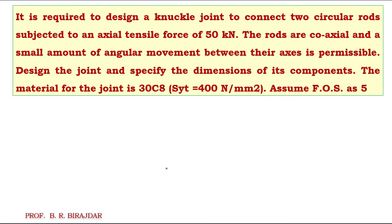Hello everyone. In the last lecture we had seen the design of the knuckle joint and the design procedure — what are the different steps we have to follow. Now in this lecture we will try to solve a problem. It is required to design a knuckle joint to connect two circular rods where the axial force is 50 kilonewton. The rods are coaxial and a small amount of angular movement between their axes is permissible. Design the joint and specify the dimensions of the components.